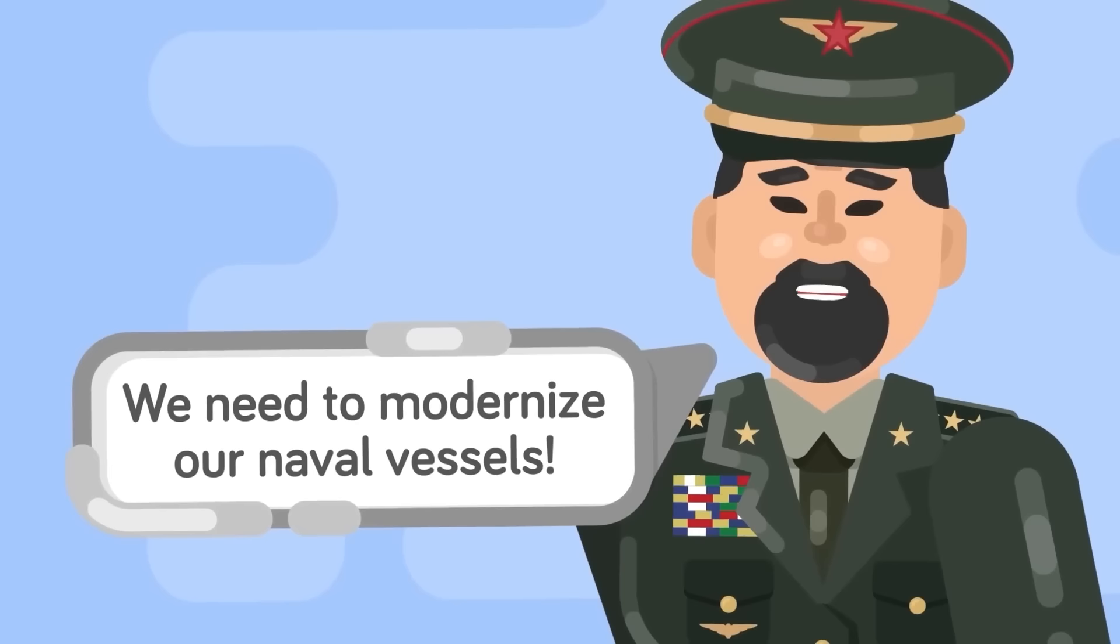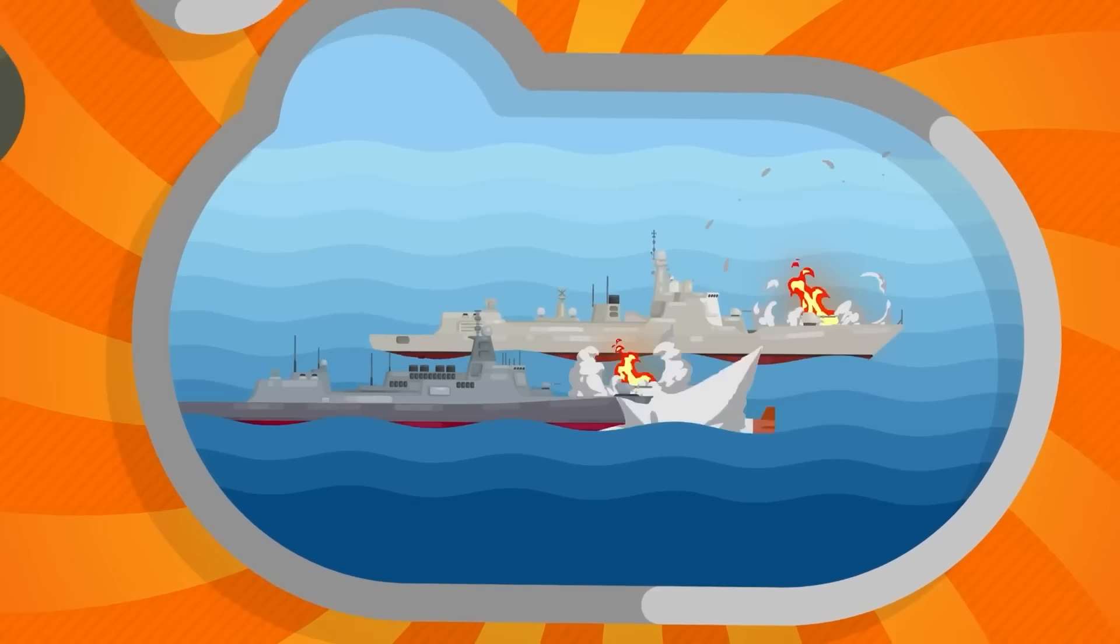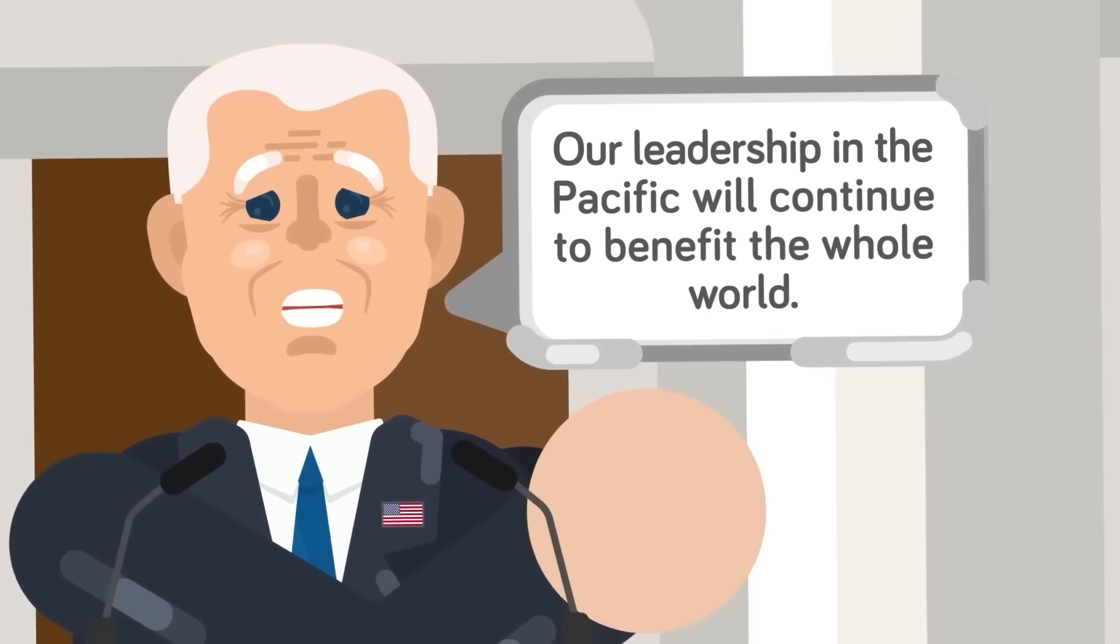And although the nuclear powered subs that Australia will receive don't have nuclear weapons, they will be equipped with torpedoes and cruise missiles which could devastate Chinese forces in an armed conflict. Reason 2. Western powers will have more control over waterways in the region. During the same speech, President Biden also said, our leadership in the Pacific has been to the benefit of the entire world. We've kept sea lanes and skies open and navigable for all. We've upheld basic rules of the road.